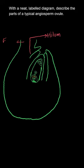This is the structure of an ovule. The first part which we see is the funicle. It connects the whole ovary and the ovule.